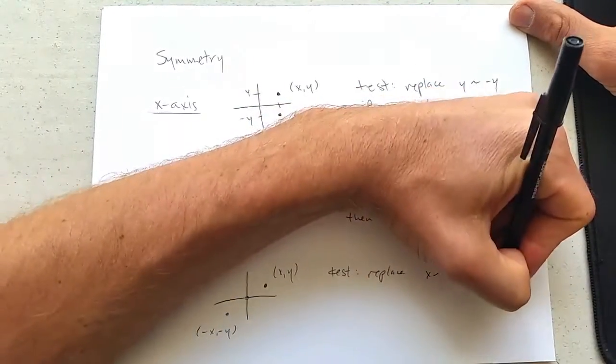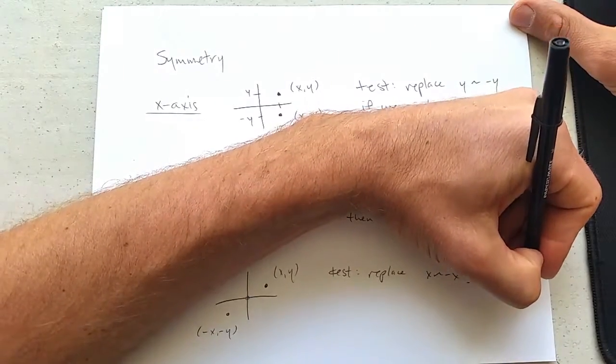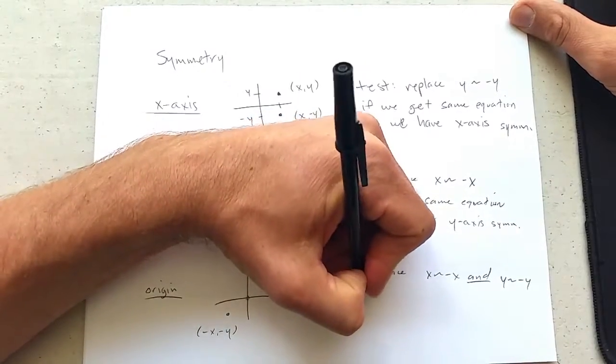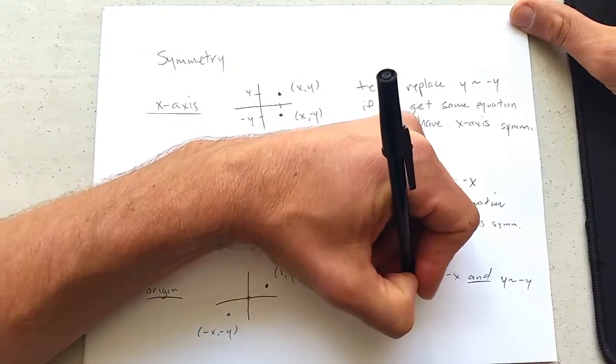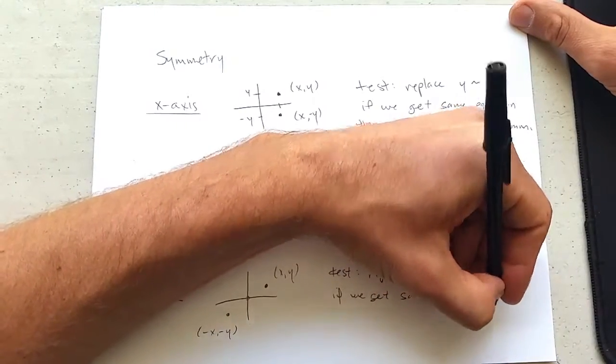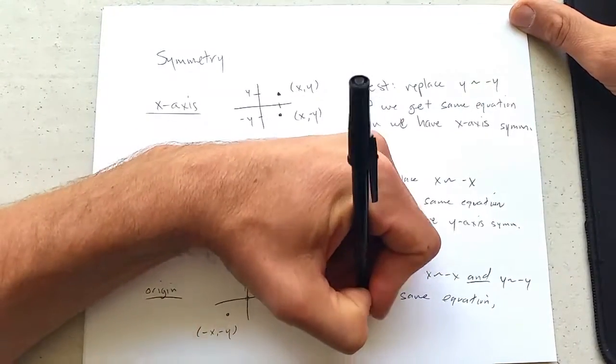And we have to make two swaps. Replace x with negative x and y with negative y. If we get the same equation, then we have origin symmetry.